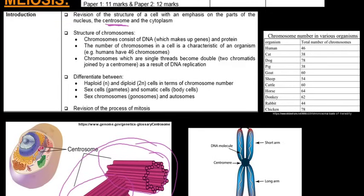We know by now that chromosomes consist of DNA and proteins, and the number of chromosomes in a cell is characteristic of an organism. Humans have 46 chromosomes and that is characteristic of us. If it was anything more or less, you would have a different organism.